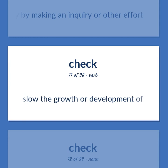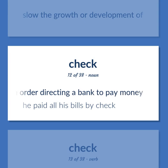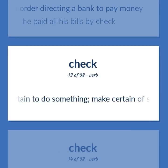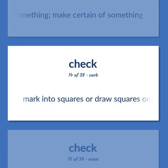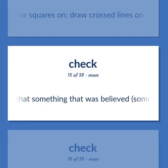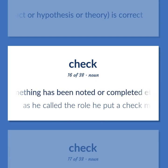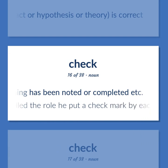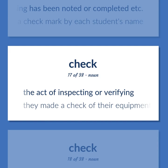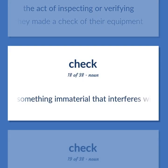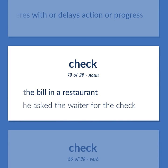CHECK (continued): Slow the growth or development of. A written order directing a bank to pay money. Example: He paid all his bills by check. Be careful or certain to do something; make certain of something. Mark into squares or draw squares on; draw crossed lines on. Additional proof that something believed — some fact or hypothesis or theory — is correct. A mark indicating that something has been noted or completed. Example: As he called the roll he put a check mark by each student's name. The act of inspecting or verifying. Example: They made a check of their equipment. Something immaterial that interferes with or delays action or progress. The bill in a restaurant. Example: He asked the waiter for the check.